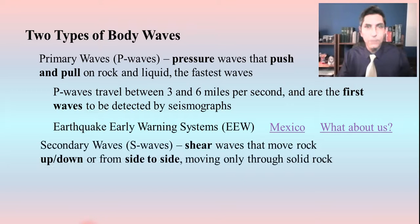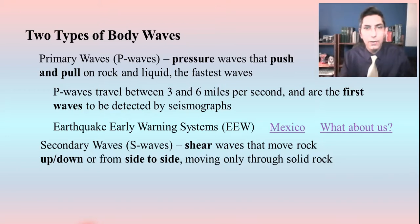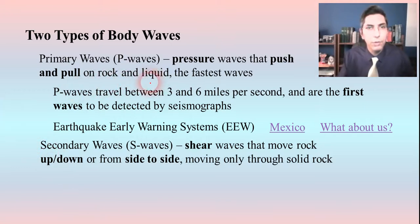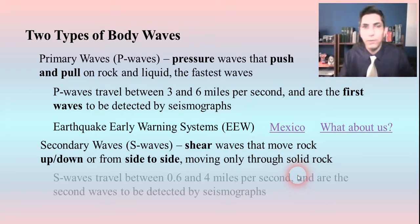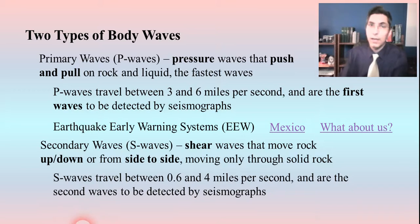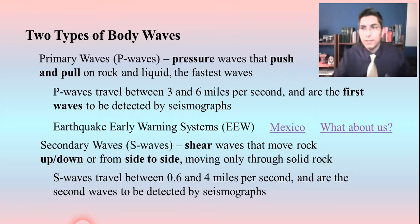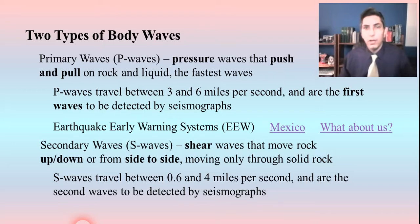The other type of body wave is called secondary waves — S waves. These are shear waves that move rock up and down or side to side. One of the main differences between P waves and S waves is that S waves only move through solid rock, whereas P waves can travel through liquid as well. S waves travel pretty quickly, but not as fast as P waves — between about 0.6 and four miles per second. These are the second waves to be picked up by seismographs, and you can probably feel them — they are usually the shaking you feel at the beginning of an earthquake.